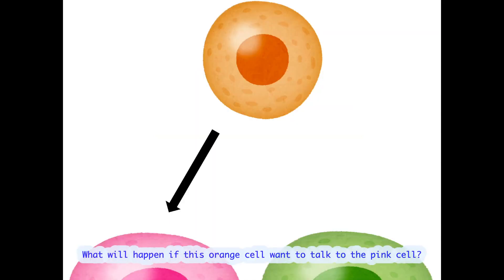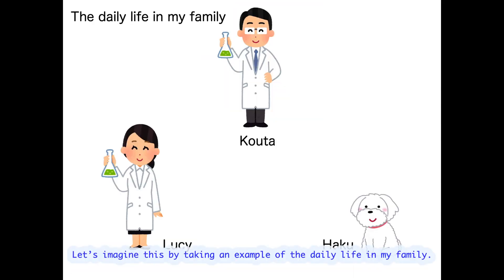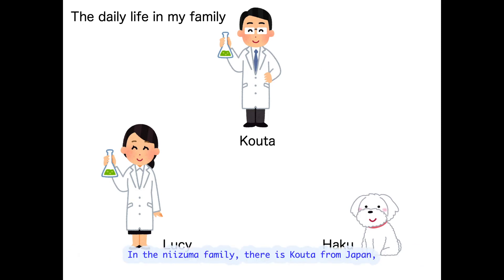What would happen if this orange cell wanted to talk to this pink cell? Let's imagine this by taking an example of daily life in my family. In the Nizuma family, there is Kota from Japan, Lucy from Shanghai, China, and Haku, a little Maltese.